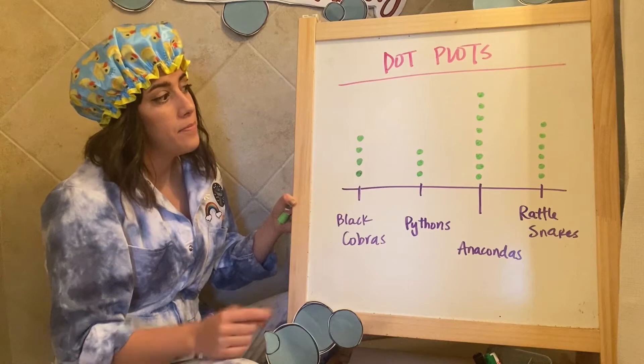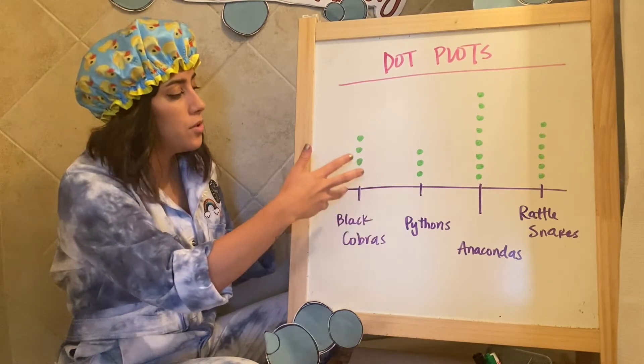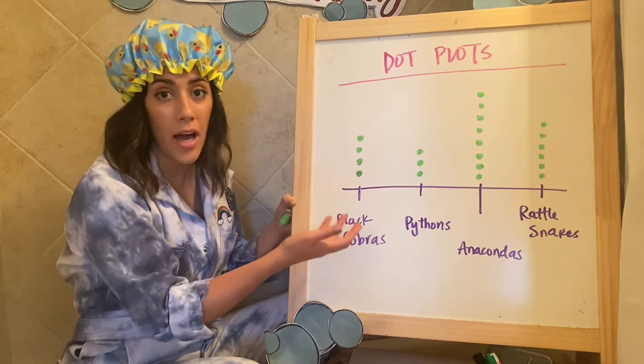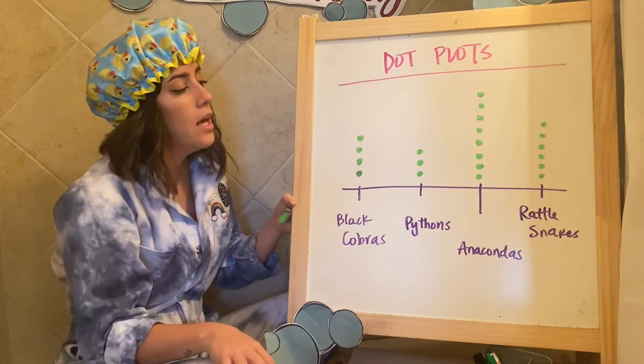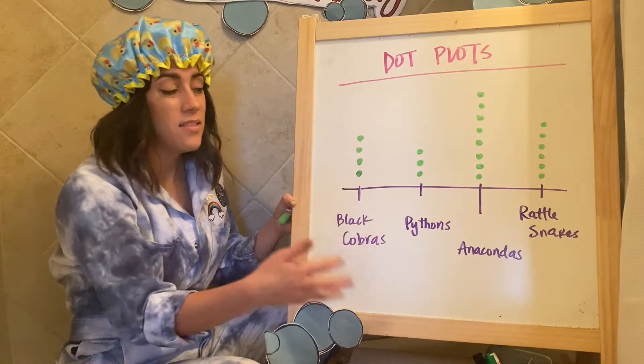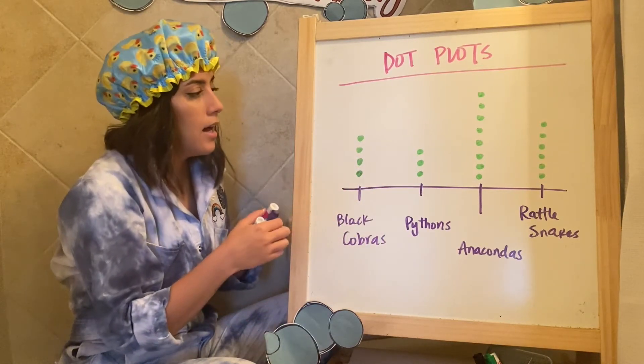That is a dot plot in itself. You can make a frequency table out of this information. You can tally up the number of dots you see, you can put the total amount, or you can just leave it like this and answer questions based off that.